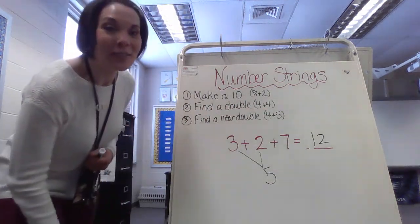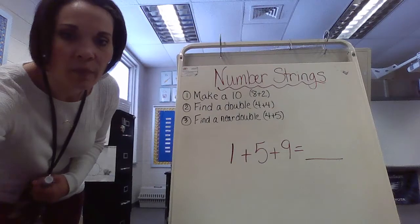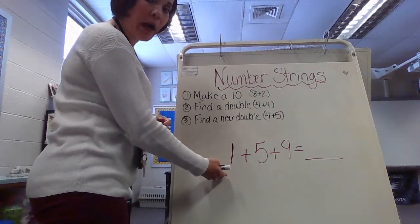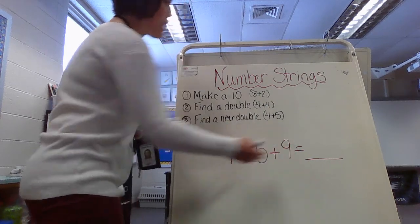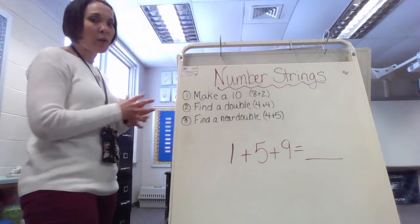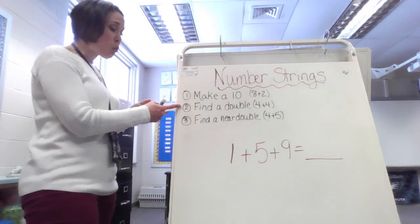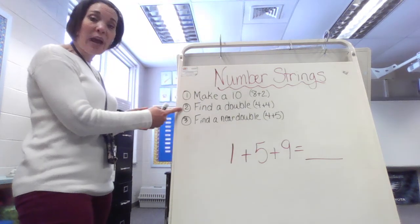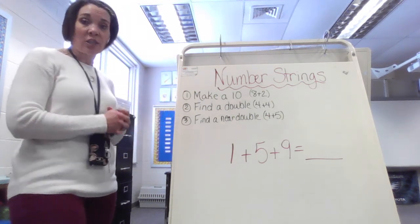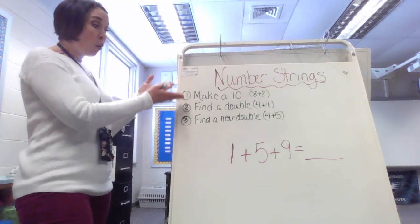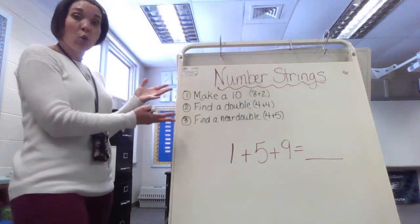So hold on, hold tight, we're going to do another one. Okay, so we're back. Now we're looking at our next number string. I have 1 plus 5 plus 9. Every time you're thinking about number strings, these are the strategies that are going right through my head. And this is the way I say them to myself: Can I make a 10? Could I find a double? Is there a near double somewhere?